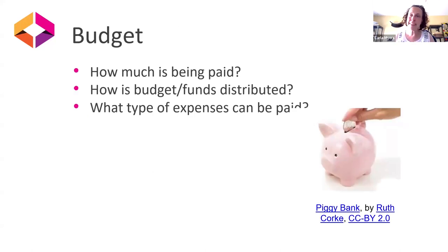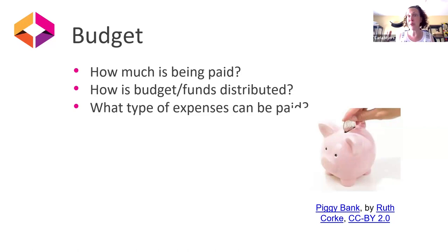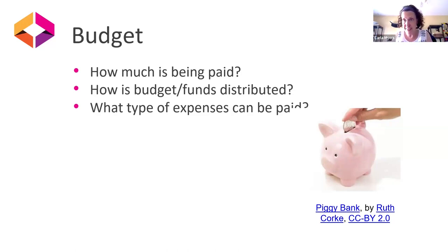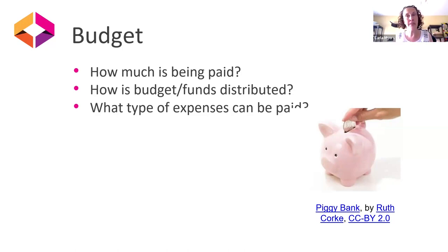Budget: a big thing here is how much is being paid and how that money is distributed — all upfront, in increments tied to time, tied to different completion points, or all at the end. Also, what type of expenses can it pay? Miami University is a state institution, so state funds are regulated in what they can be spent on. We also have donor funds used for affordability initiatives, and the rules for those differ from state funds, so being cognizant and clearly communicating that is important.